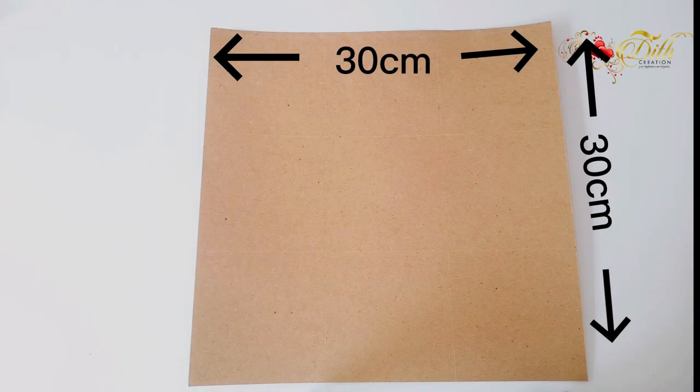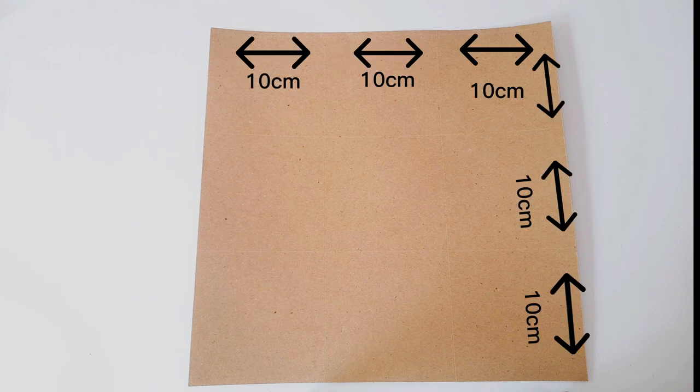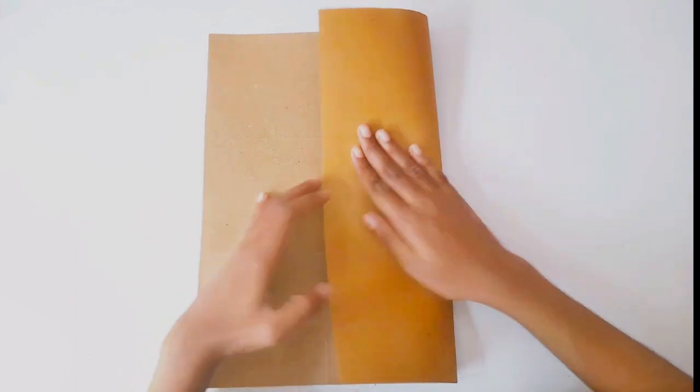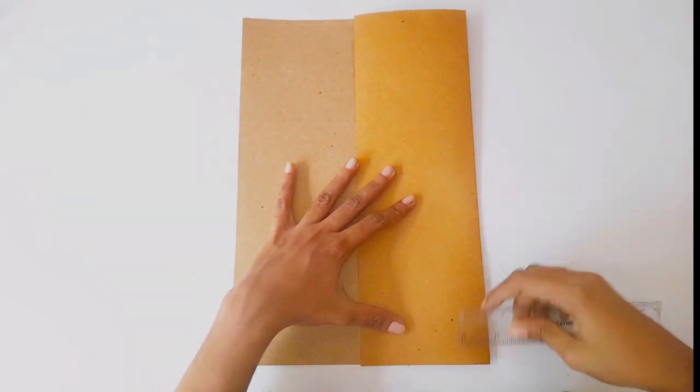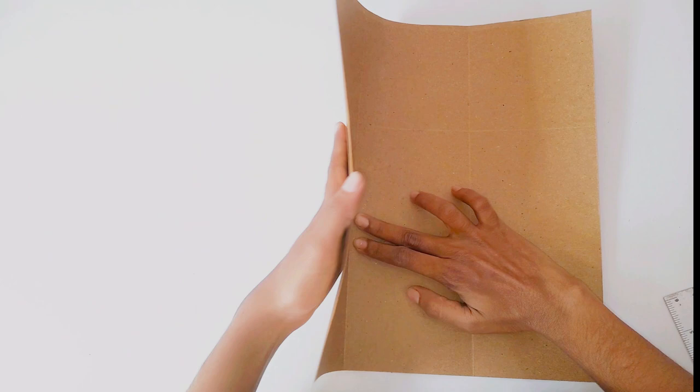First, I take a 30 by 30 centimeter craft board. Next, I divide the board into three equal parts and crease the lines. Now I fold along the lines drawn on the board.